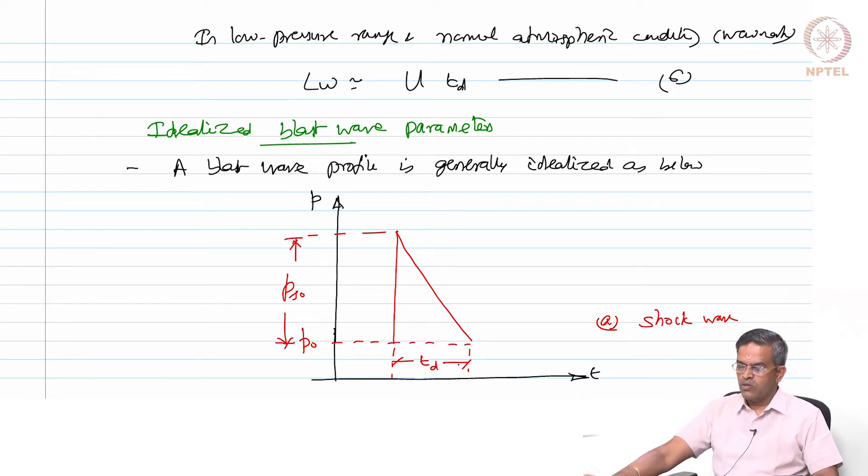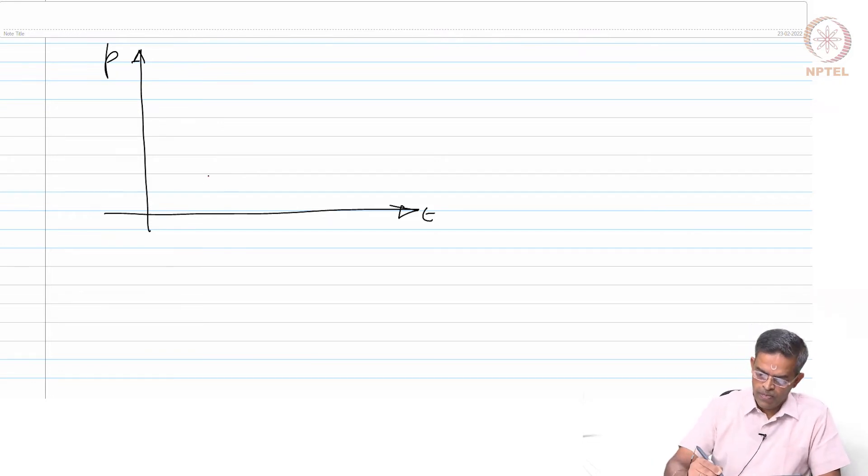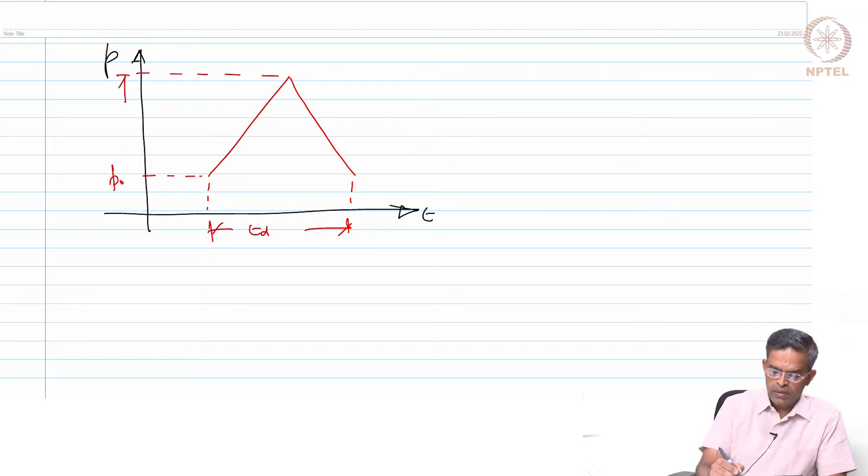So an idealized shock wave for design purposes. When you talk about the pressure wave, time scale and pressure is again called as Td. This is P0 and this is called pso and this is idealized pressure wave.